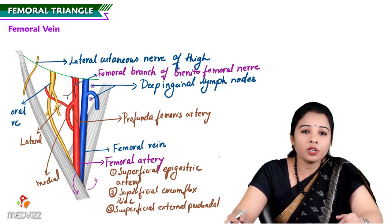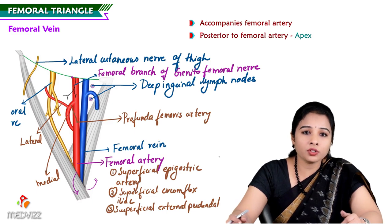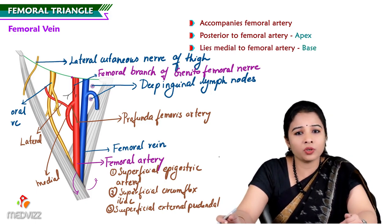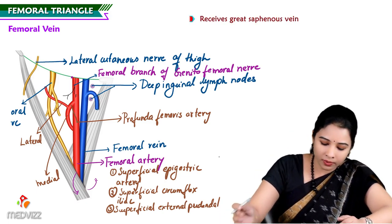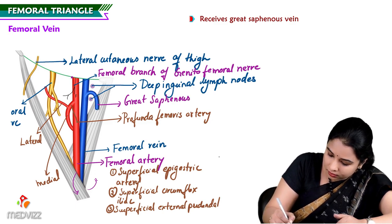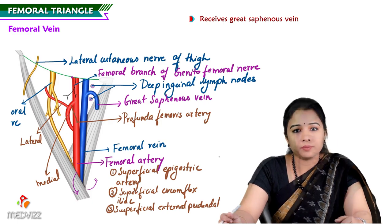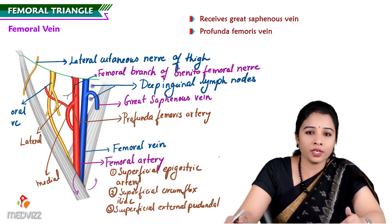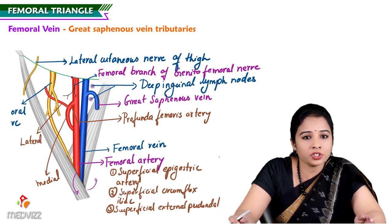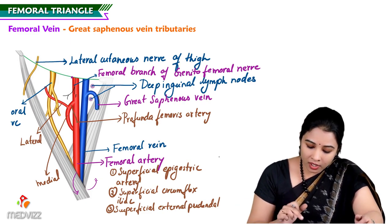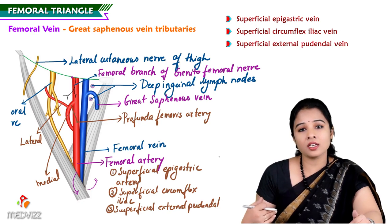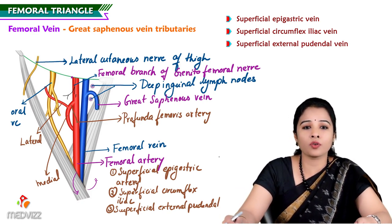The femoral vein accompanies the femoral artery. It is posterior to the femoral artery at its apex and medial to the femoral artery at its base. It receives the great saphenous vein and the profunda femoris vein. The tributaries of the great saphenous vein are the superficial epigastric vein, superficial circumflex iliac vein, and superficial external pudendal vein — the same names as the arteries — all present within the superficial fascia of the femoral triangle.